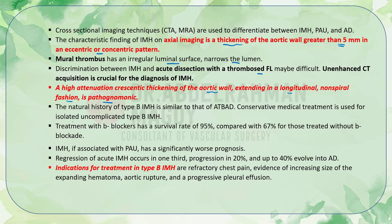The natural history of type B IMH is similar to that of acute type B aortic dissection, so conservative medical treatment is used for isolated uncomplicated type B IMH. Treatment with beta blockers has a survival rate of 95% compared with 67% for those treated without beta blockade. IMH associated with penetrating aortic ulcer has a significantly worse prognosis. Regression of acute IMH occurs in one third, progression in 20%, and up to 40% evolve into aortic dissection.